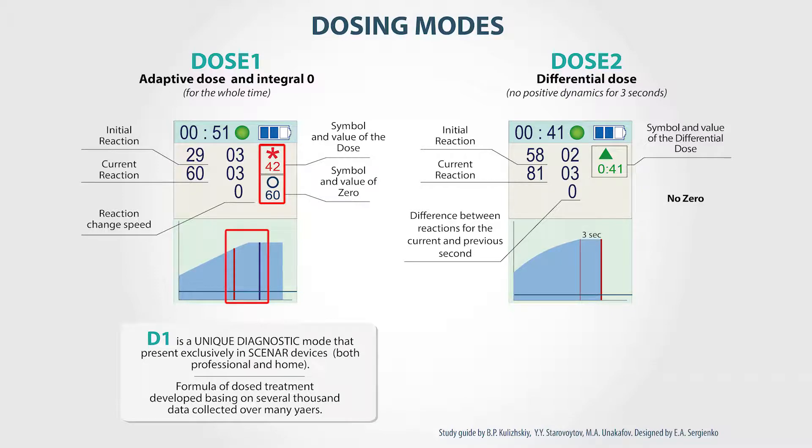This parameter indicates the quality of a dialogue, or in other words, the speed of interaction between the device and the human body. We also can see two vertical lines on the graph — blue and red — and also two indicators that look like an asterisk and a circle and have digits below them.